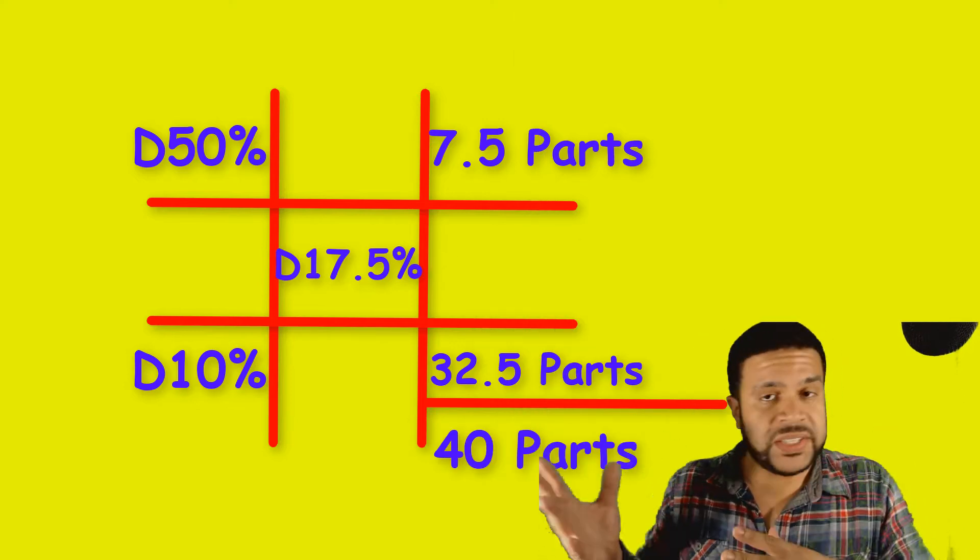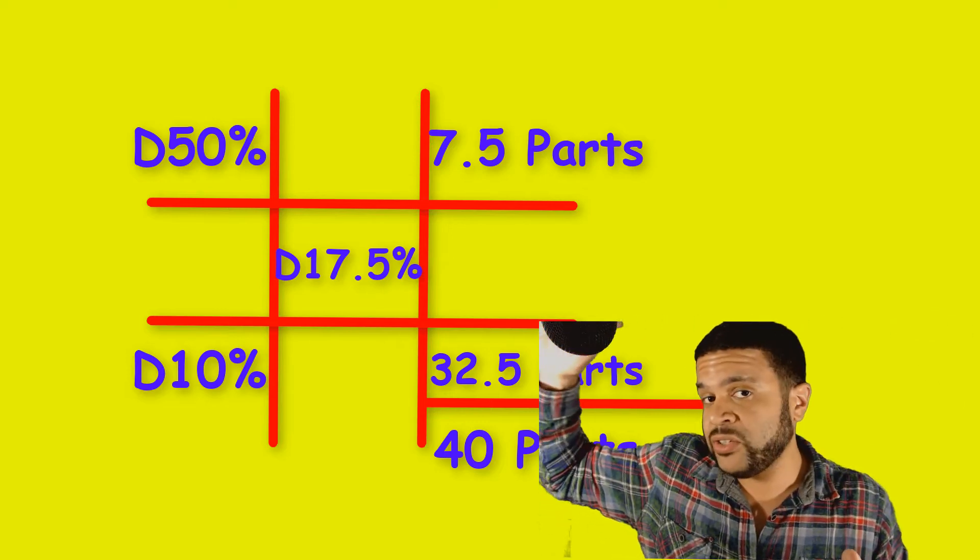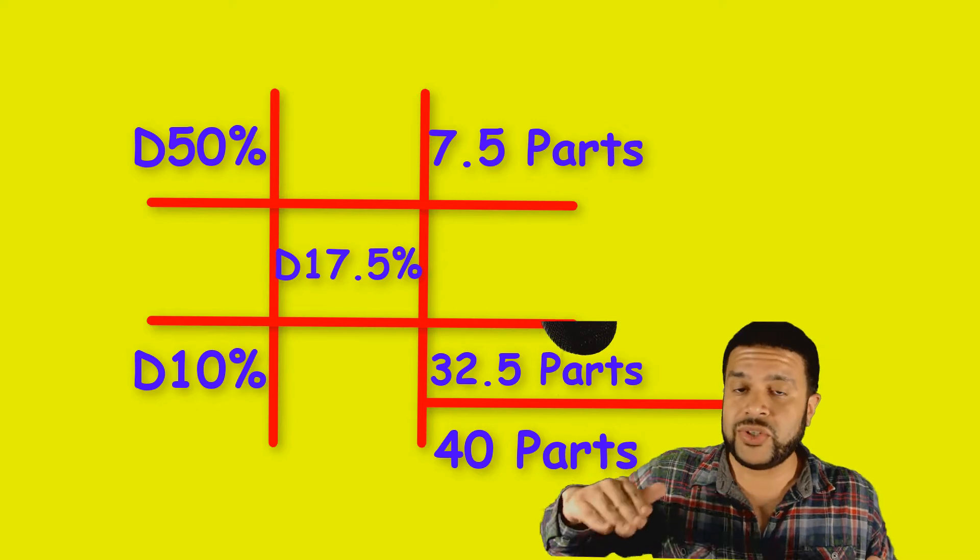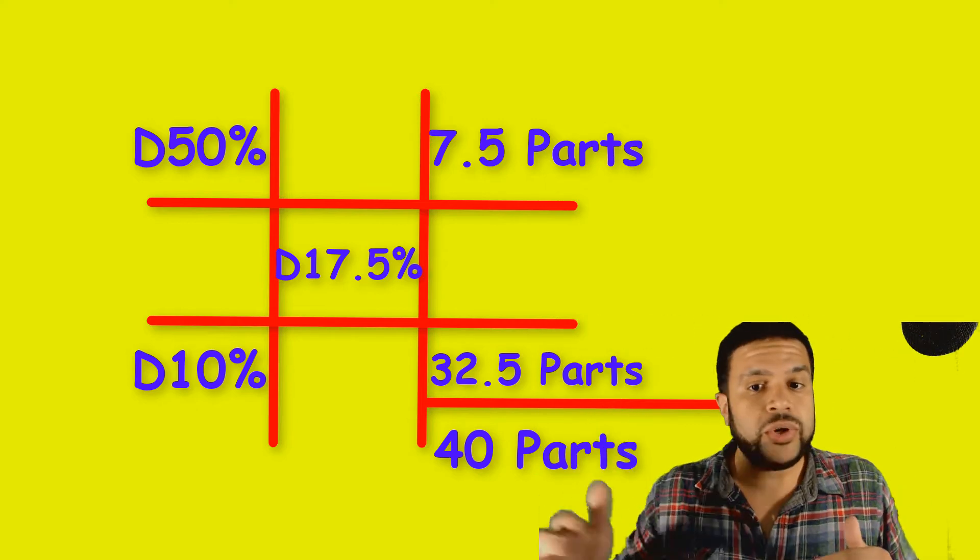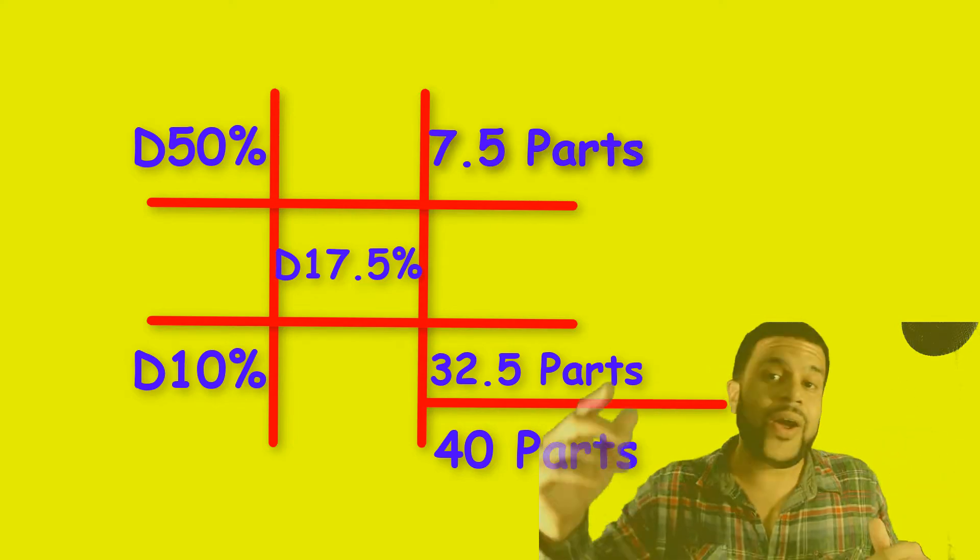Now just to recap really quick and we'll go on to the next step. You put what you need in the middle, 17.5. You put the higher ingredient concentration on the top left-hand corner, 50%. You put the D10 under that, Dextrose 10%. Then you want to cross-subtract. So we got the 32.5 and we got the 7.5 and then you want to add your parts. You follow me? All right, here we go.